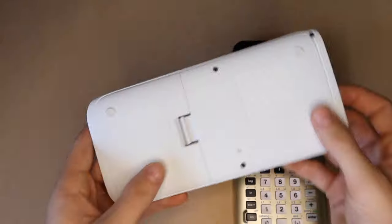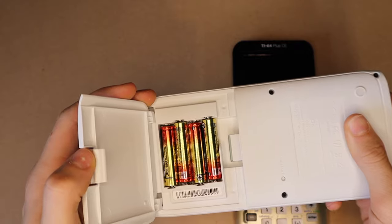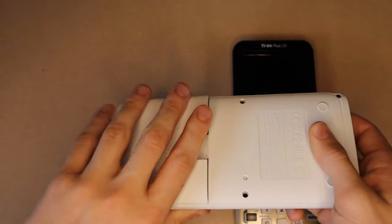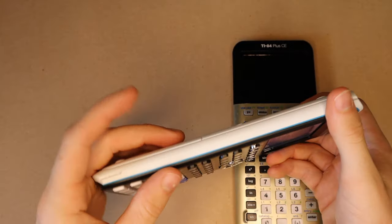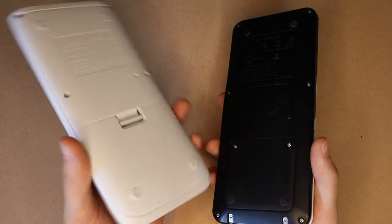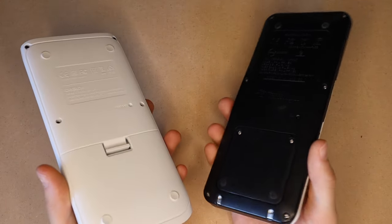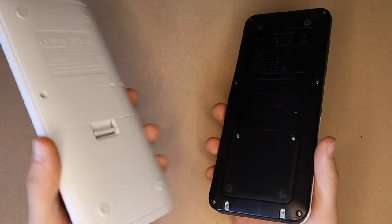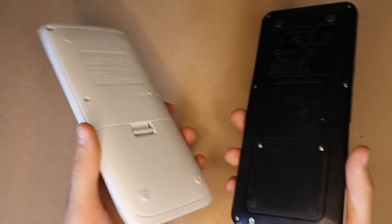Whereas the Casio uses four AAA batteries for its power source, and that results in a slightly thicker frame, as you can see. So there's benefits and drawbacks to having disposable batteries versus a rechargeable battery. One being weight. This is bulkier, and it's also heavier.